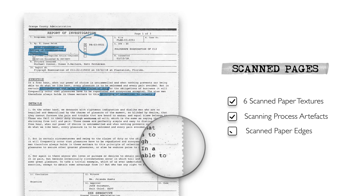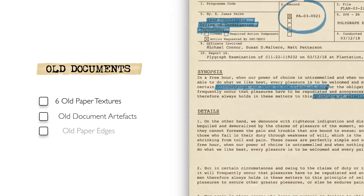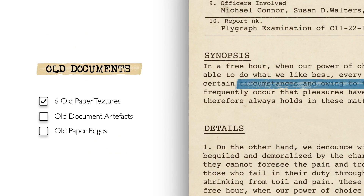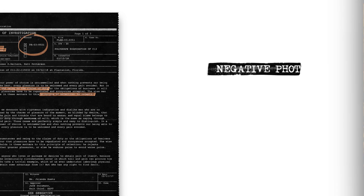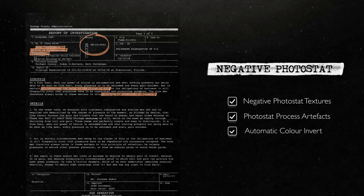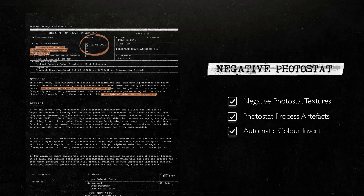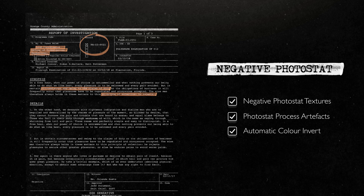You can easily add some realism and grit by selecting the scanned pages visual style. Old document style will apply old paper textures, degrade text quality, and even roughen page edges. And if you need to take your viewer all the way to the early 1900s, then negative photo stat is your style for the job.